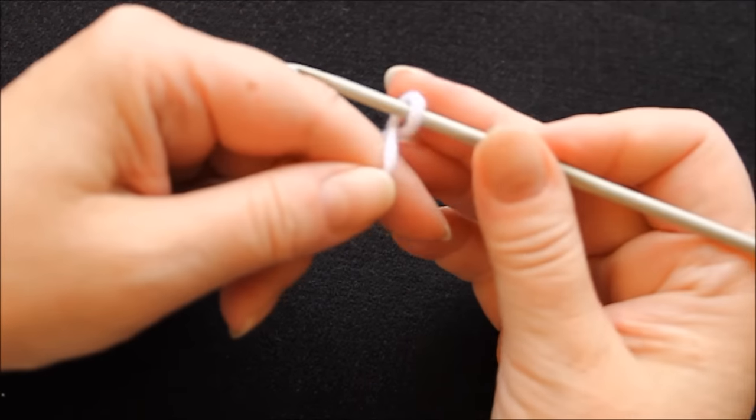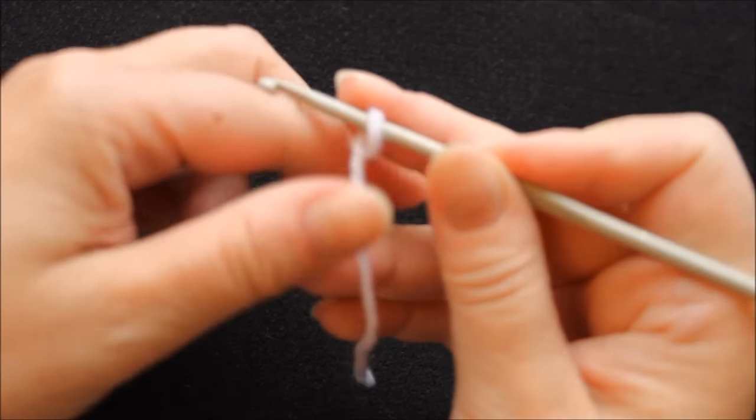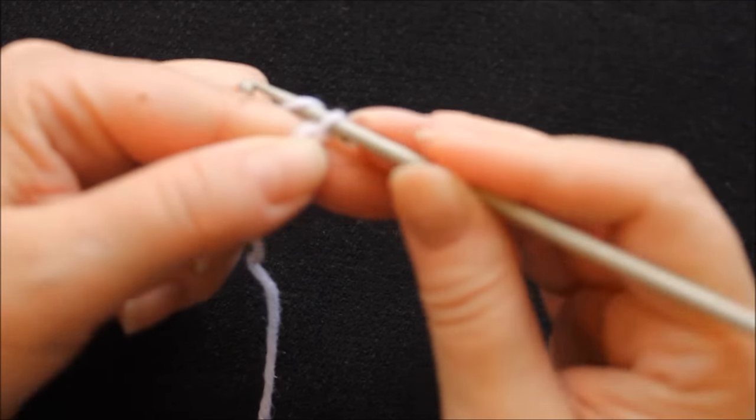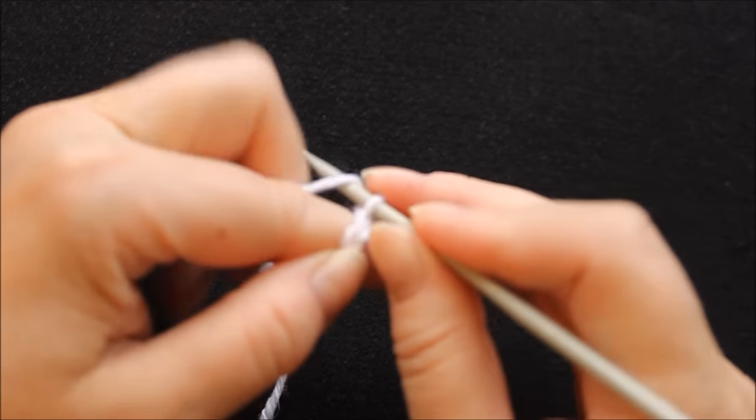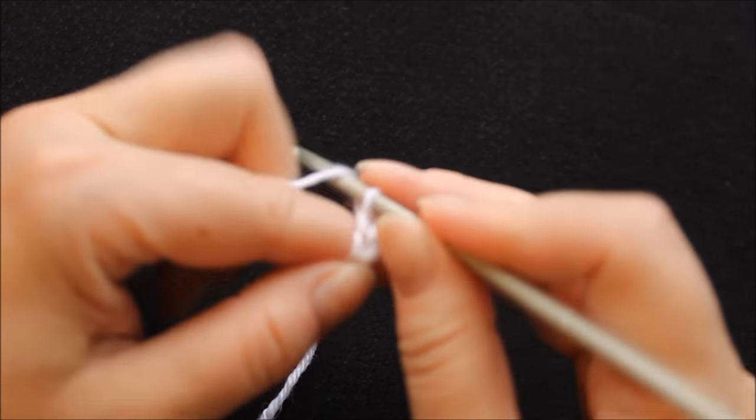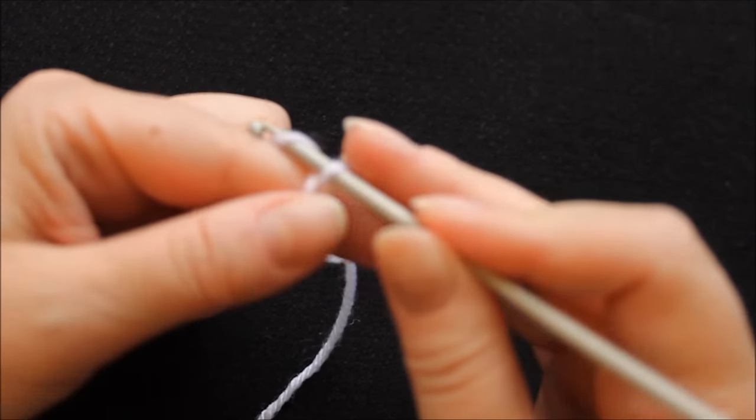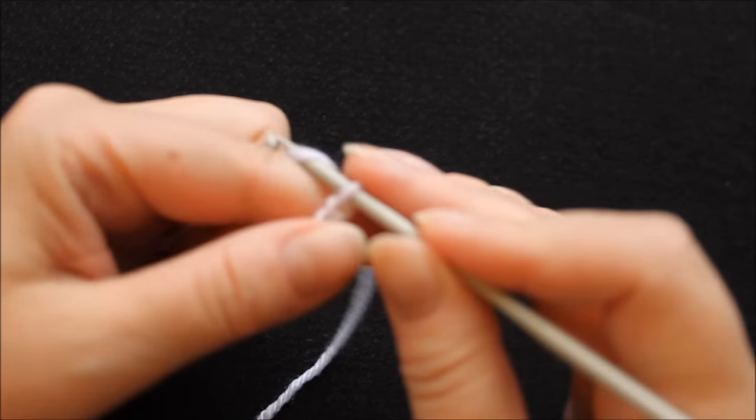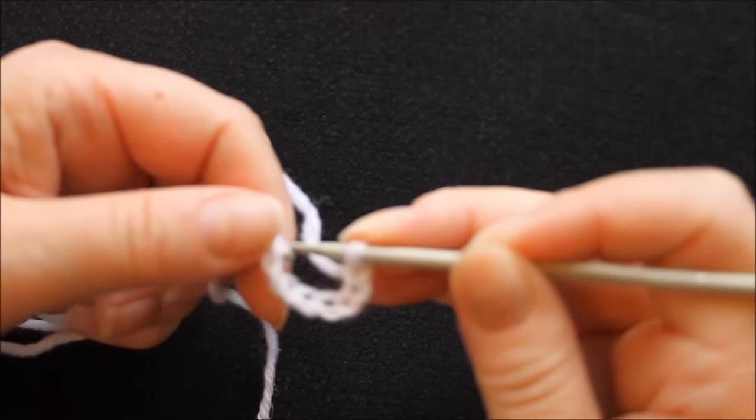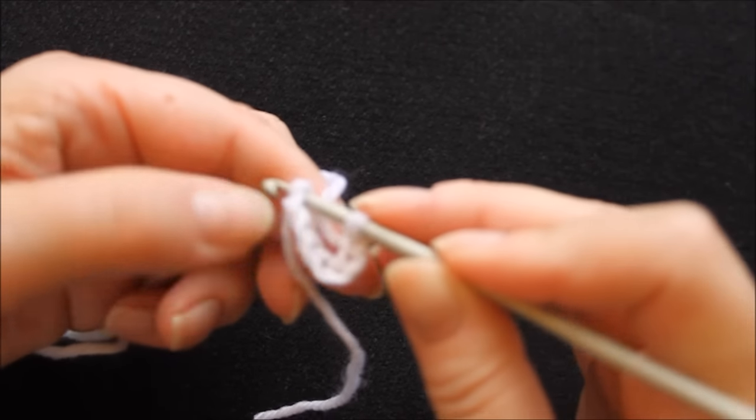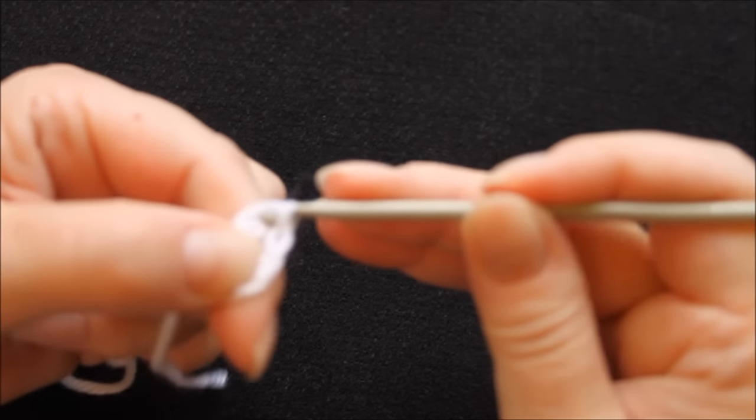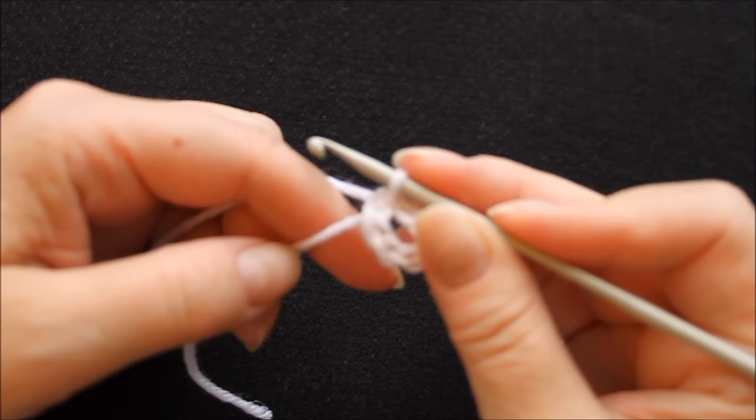I start by twisting to start a chain and then chain 8. Then I attach it to form a ring, slip stitch, there.